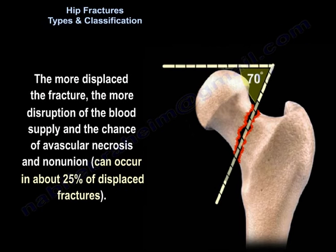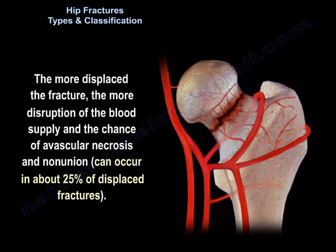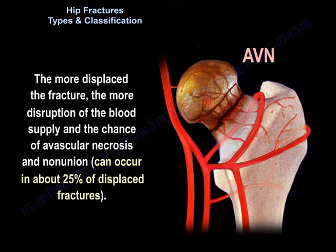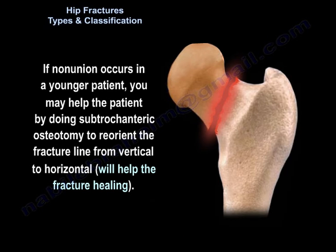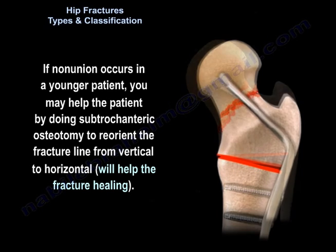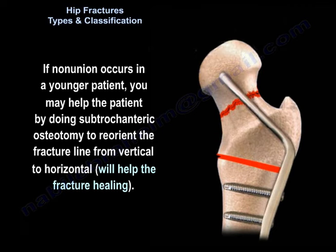The more displaced the fracture, the more disruption of the blood supply and the greater the chance of avascular necrosis and nonunion, which can occur in about 25% of displaced fractures. If a nonunion occurs in a young patient, you may help the patient by doing a subtrochanteric osteotomy to reorient the fracture line from vertical to horizontal, which will help fracture healing.